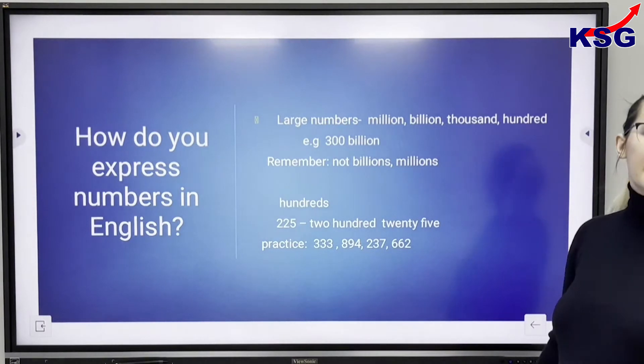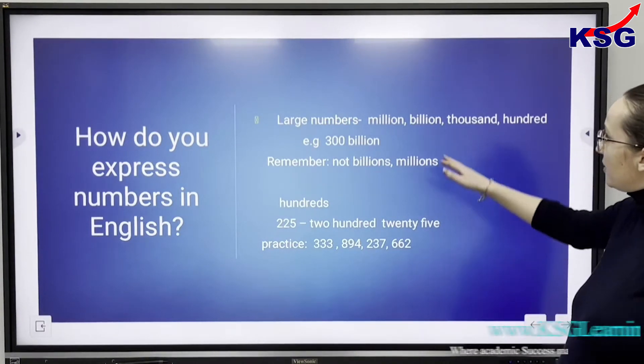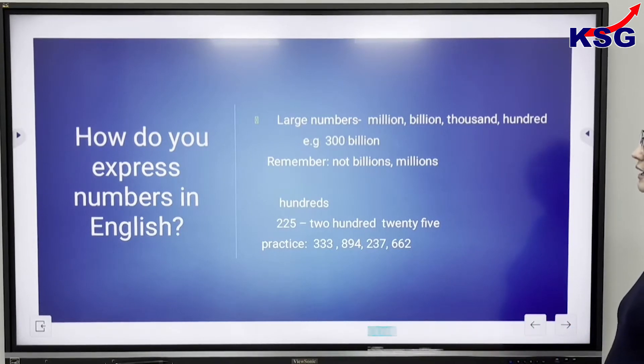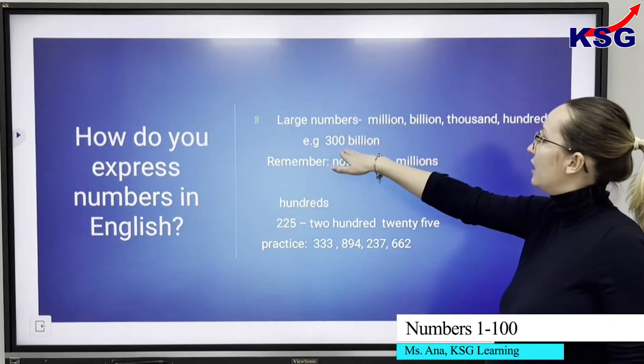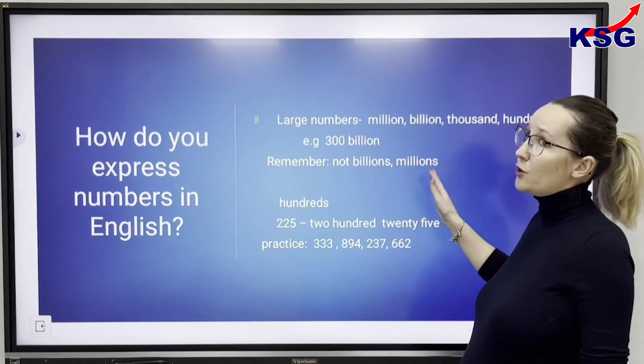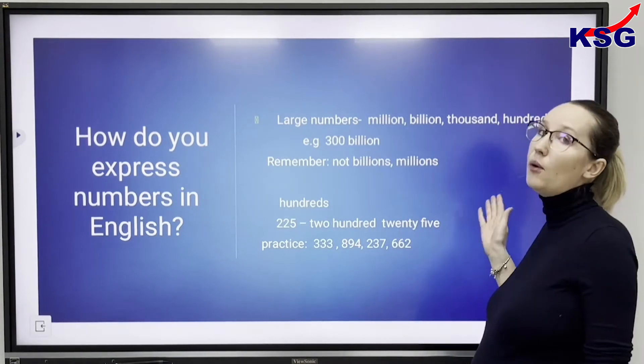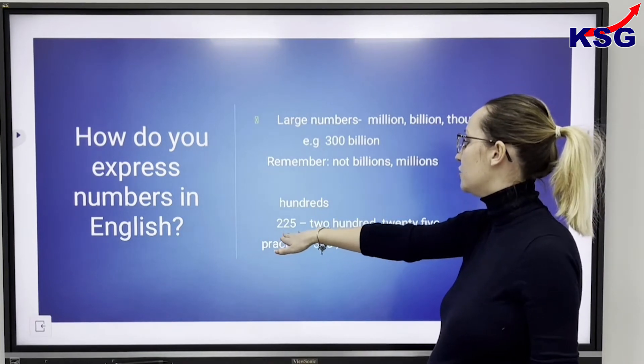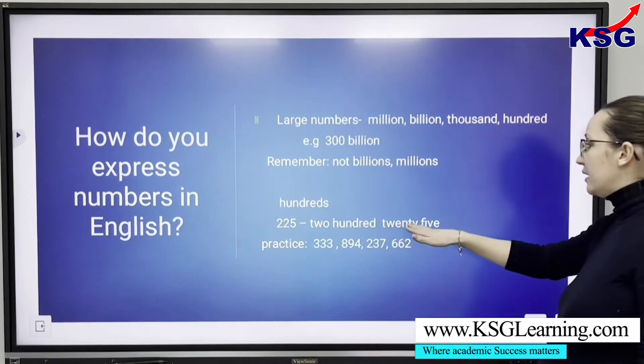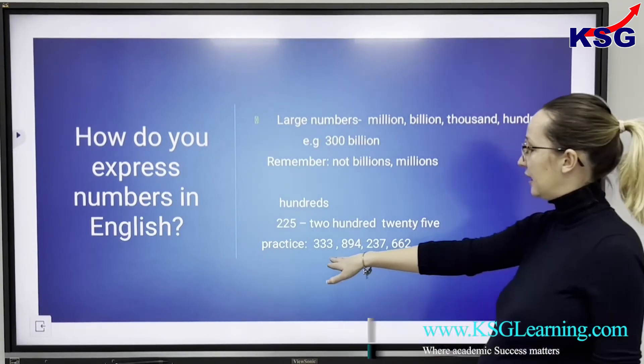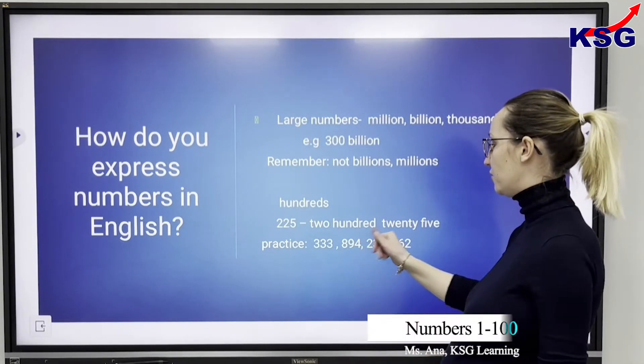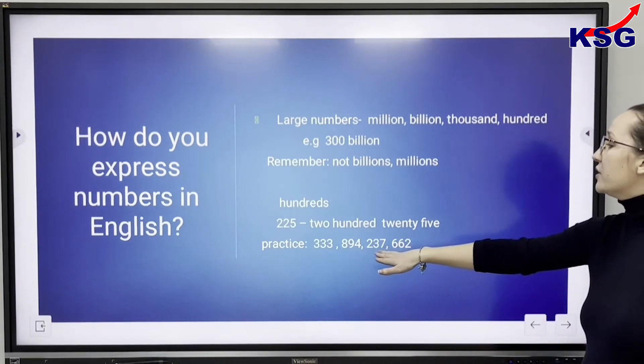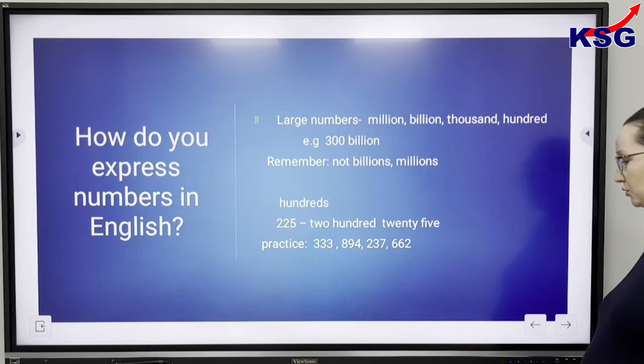How do you express numbers in English? Large numbers we say million, billions, thousand, hundred and an example is 300 billion. Remember we don't say billions or millions. And for hundreds we have 225, 225 and then we have 333, 894, 237, 662.